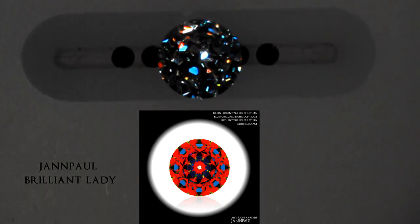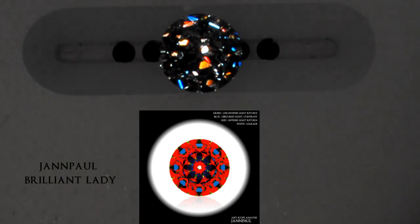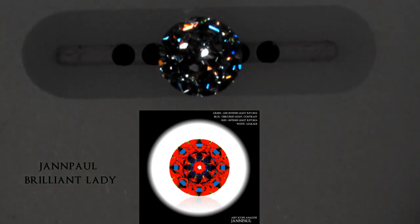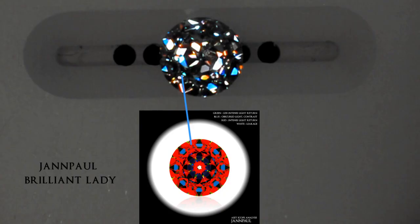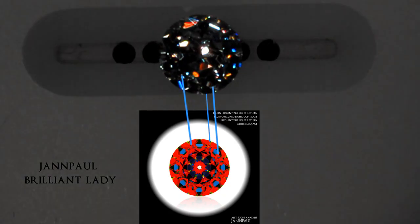Last but not least is Jan Paul's Brilliant Lady 21 with 221 facets. This diamond is a good illustration of how modified round diamonds should perform. As seen from the ASAT scope, the red parts show good light return and the blue parts act as reflectors. Likewise, the green parts in the circumference add to the light dispersion of the diamond. The Brilliant Lady is such a desirable cut because of the meteorite-like sparkling effect that is produced.